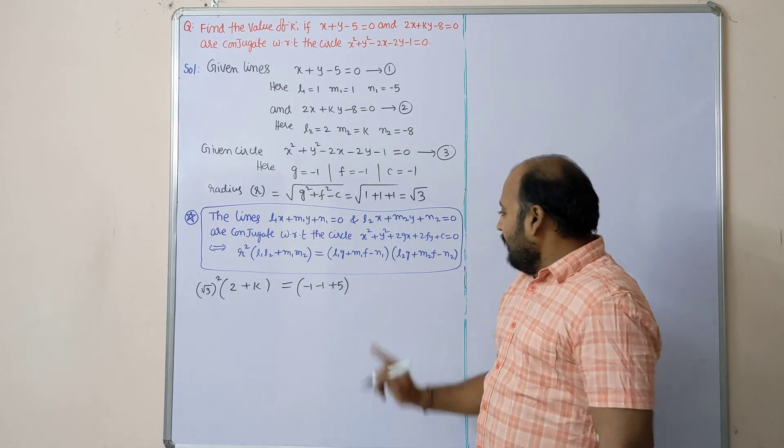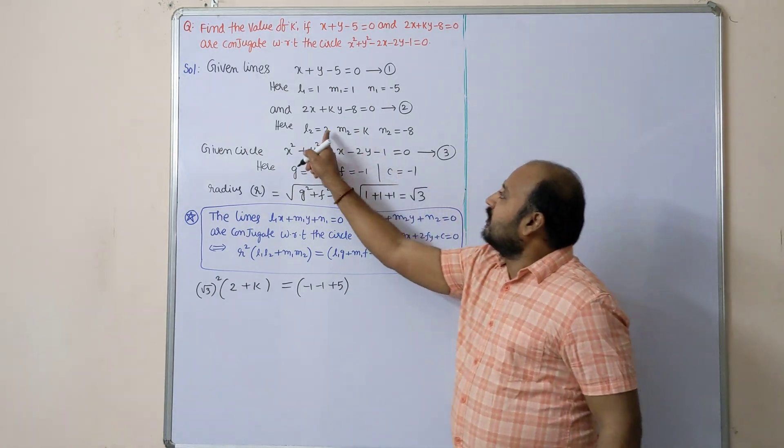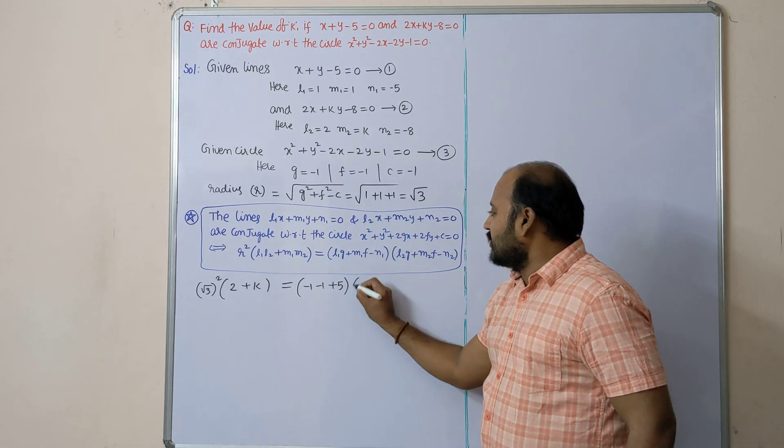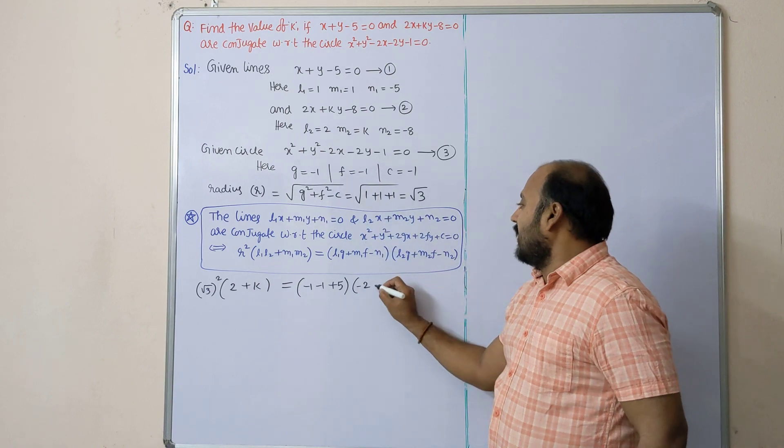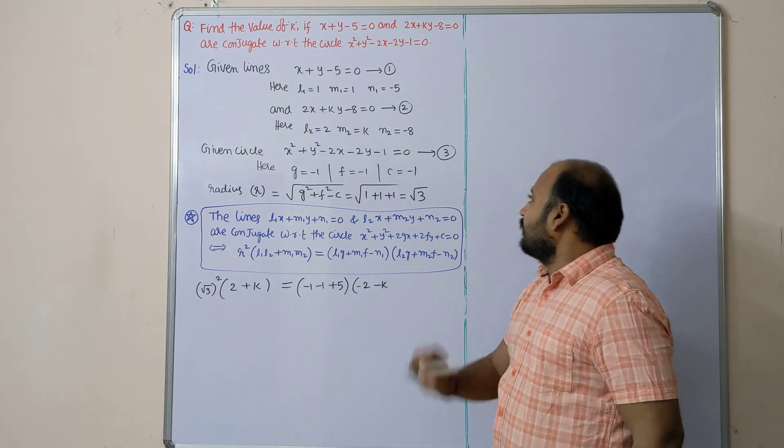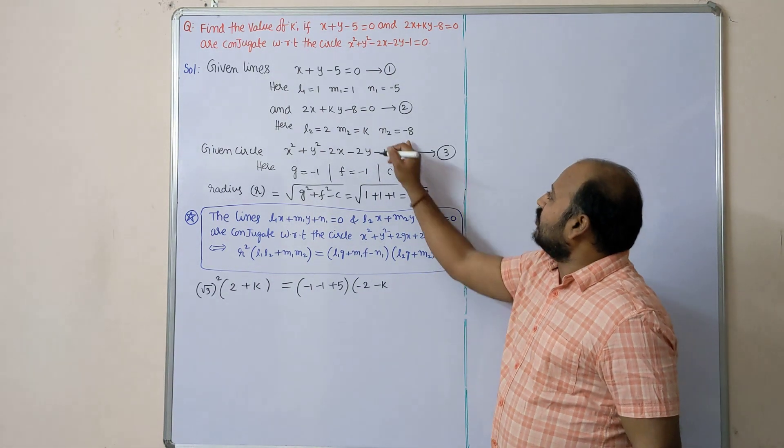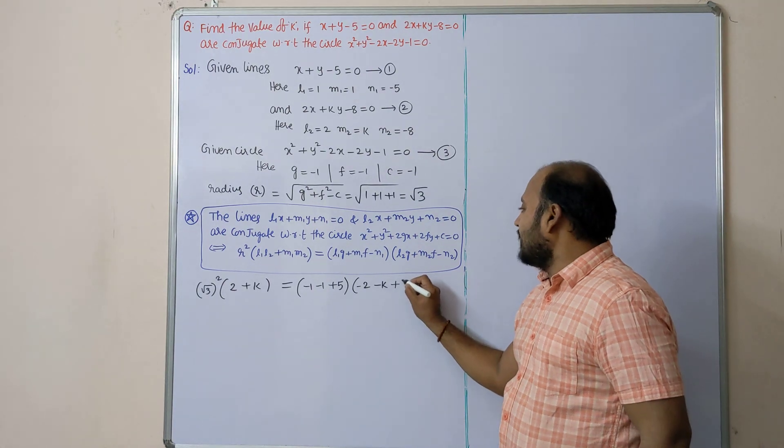Observe carefully: l2g: 2 × (-1) = -2, plus m2f: k × (-1) = -k, minus n2 minus of -8 plus 8.